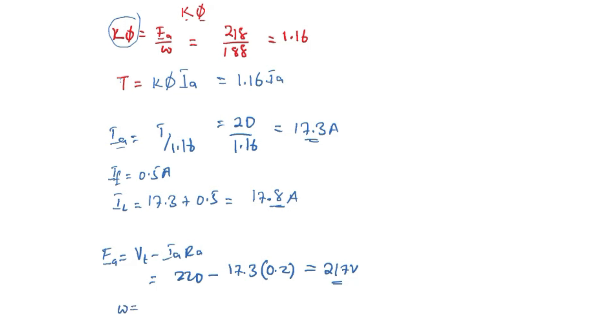Now omega equals EA over the constant K phi. This is going to be 216.5 divided by 1.16, and we are going to obtain 187 rad per second.